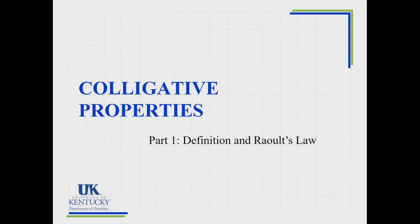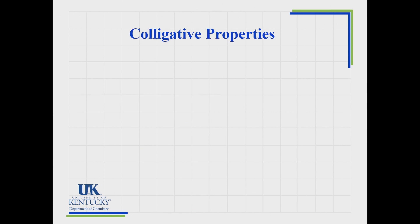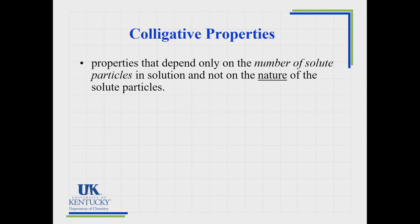Let's define what a colligative property is. There are multiple colligative properties. In this lesson we're going to define them and focus on the first one, which utilizes Raoult's Law. A colligative property is a property that depends upon the number of solute particles in the solution. It does not depend on the nature of the solute particles — whether it's molecular or ionic — it only depends upon how many particles are dissolved in it.